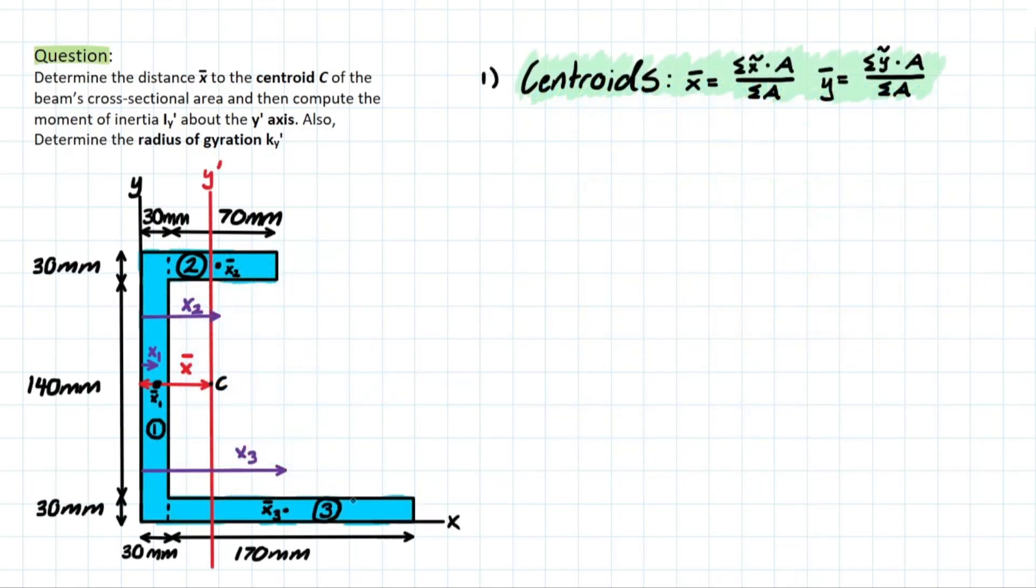All right, so now we have everything set up so we can solve for the centroid of the composite shape. Now we're looking straight on at the cross section so we have a better view of everything, and we've divided the shapes up into three separate rectangles to make our lives easier when solving for these centroids.